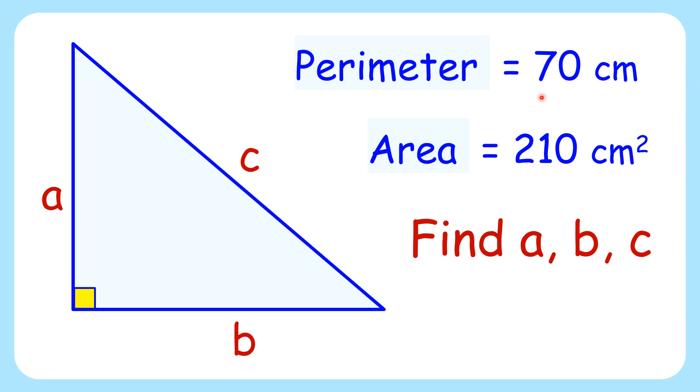In this interesting question, we're given the perimeter and area of a right angle triangle. Using this limited information, we have to find the side lengths of all three sides of this triangle.